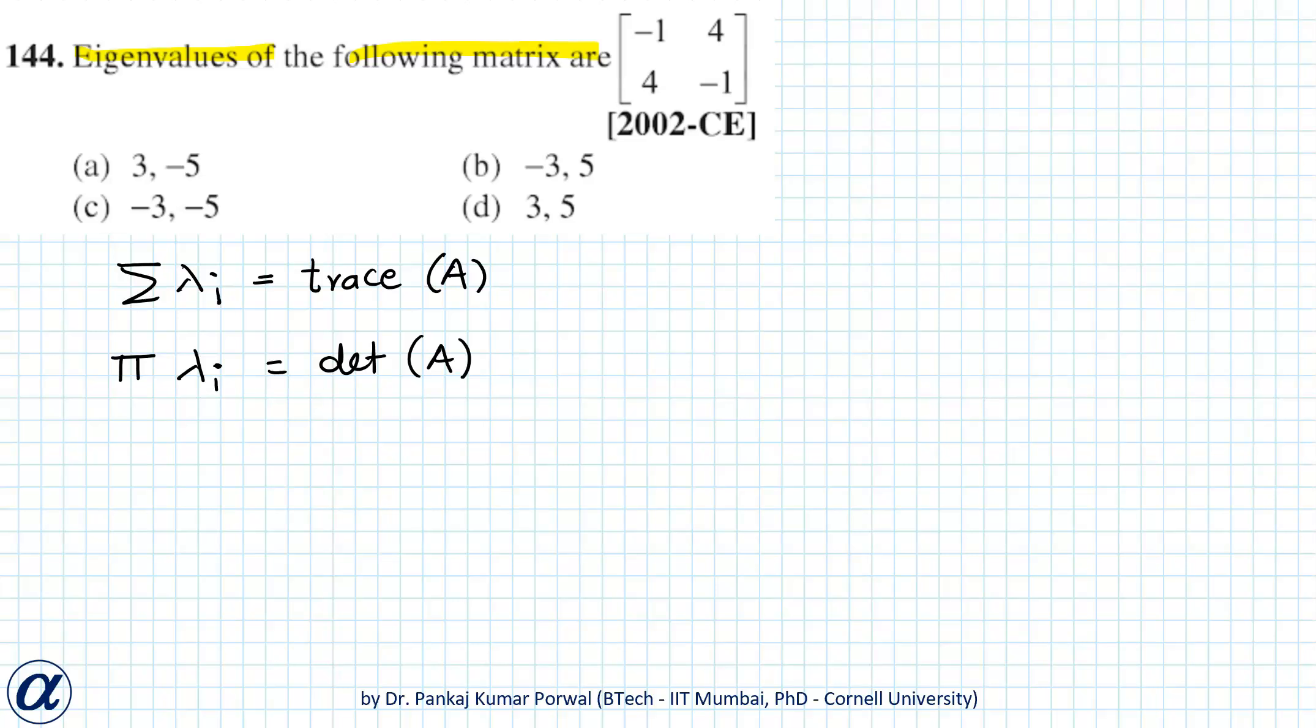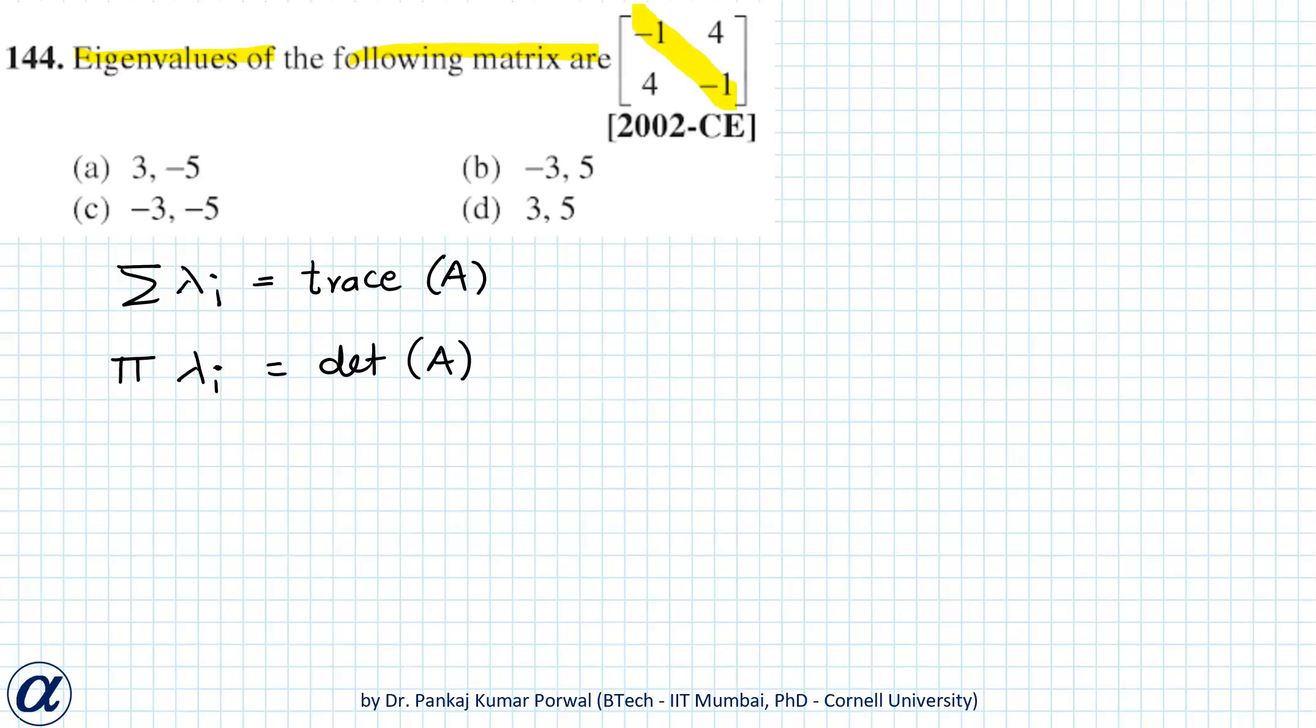So in this case, the sum of all eigenvalues equals minus two, and the product of all eigenvalues equals the determinant, which is 1 minus 16, equals minus 15.